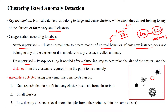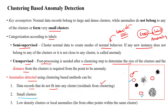In the unsupervised method, post-processing is needed after the clustering step to determine the size of the clusters. We use a distance metric to measure the distance between clusters. If any data point is not available inside any other cluster, then that is called an anomaly data point. Anomalies can be detected using various clustering methods. Data points that do not fit into any cluster are called residuals of the cluster, and those will be called anomalies.